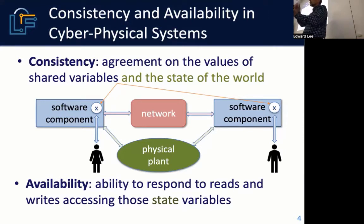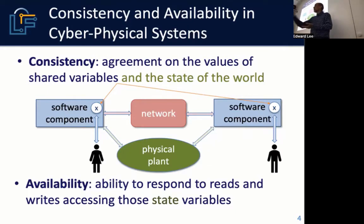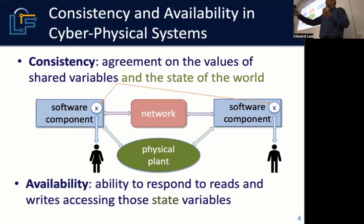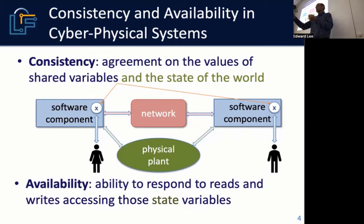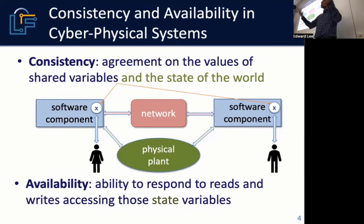Your view of the state of that world is something you want consistency on sometimes, and you want availability in the sense of being able to deliver commands to an actuator in a timely way based on sensor data. So availability translates into sensor-to-actuator latency, and consistency translates into agreement about the state of the world for cyber-physical systems.